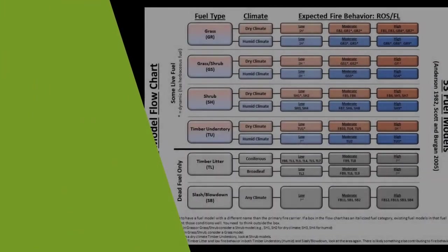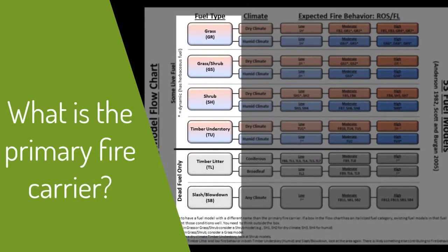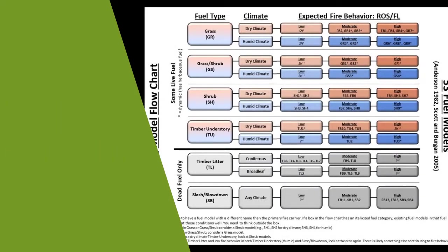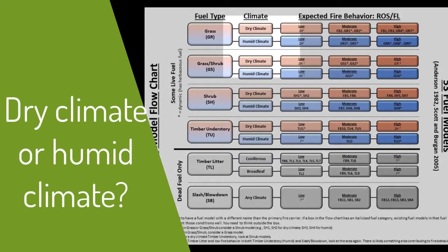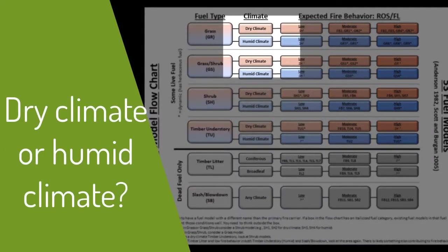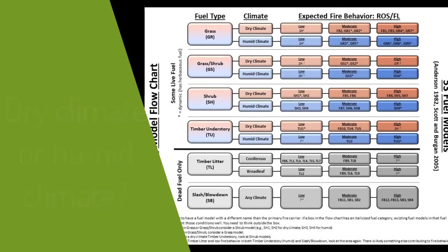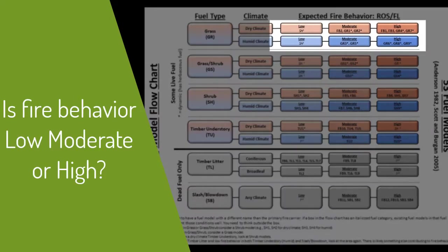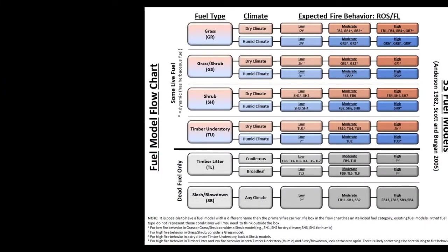The first step is to determine what the primary fire carrier is. Next, select whether this is a dry climate or a humid climate. Then assess whether the expected fire behavior is low, moderate, or high.